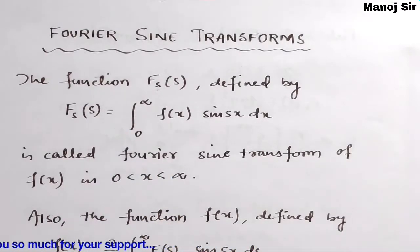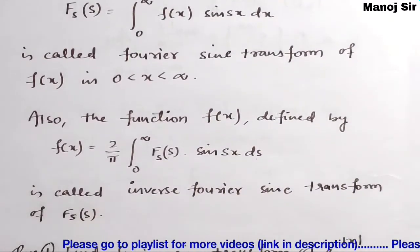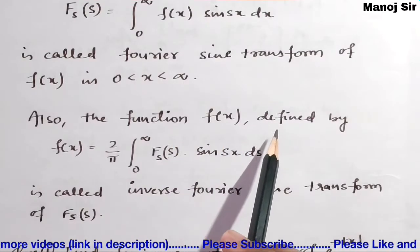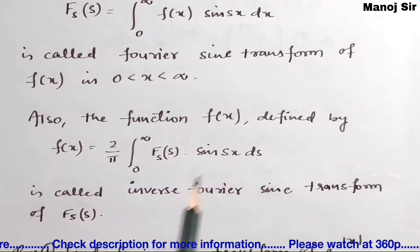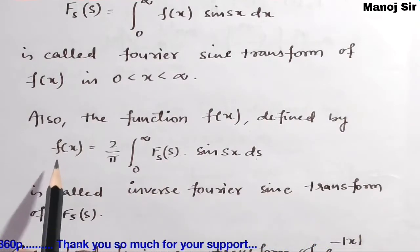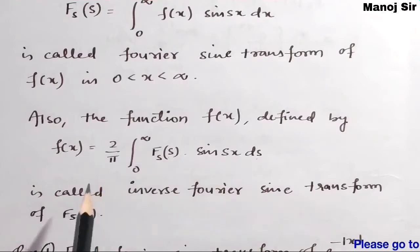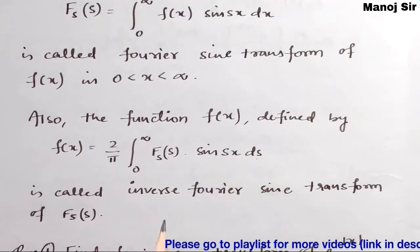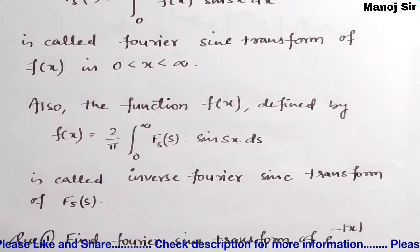After finding the Fourier sine transform, we can also find the inverse Fourier sine transform. The function f(x) is defined by f(x) equals 2 upon pi times integration from zero to infinity of F_s(s) times sine(sx) dx. If you have F_s(s) and need to find f(x), you use this formula. This is called the inverse Fourier sine transform.